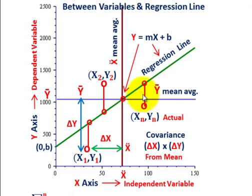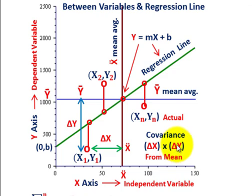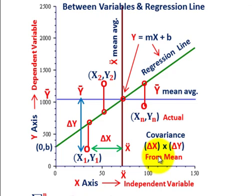You do that for all your different points and sum them up. So covariance is really the change of x from its mean value times the change of y from its mean value — the difference between each actual value and its mean — multiplied together. That's really what you're talking about with covariance: the change from the mean between your x and y values, multiplied together.